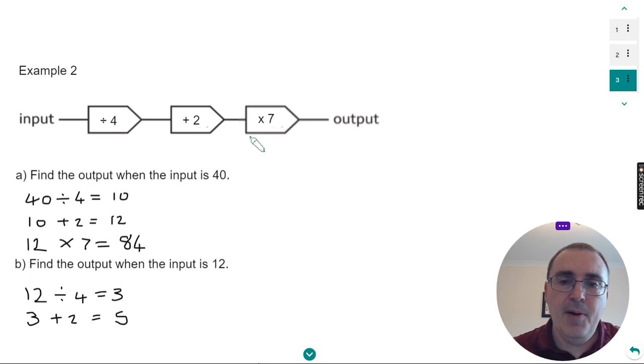The final operation is to multiply by seven. Copy the five down and times it by seven. So five sevens are 35. That would be the output.